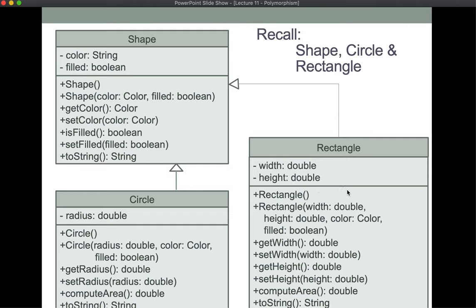Let's take a look at this UML diagram. Shape has a color and a boolean for whether it's filled, a no-parameter constructor, an all-parameter constructor, getters and setters for color and filled, and a toString. Circle extends that by adding a radius instance variable — it has its own constructors (we don't inherit constructors from the parent), getters and setters for radius, a computeArea method, and its own version of toString. Rectangle similarly has width and height, its own constructors, getters and setters, and can also compute an area and do a toString.